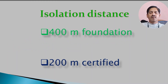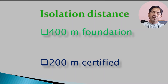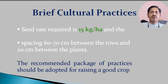The second criteria is isolation distance. To maintain the genetic and physical purity of the seed, 400 meters of isolation is required for foundation seed and 200 meters is required for certified seed. I will explain the difference between foundation and certified seed shortly.